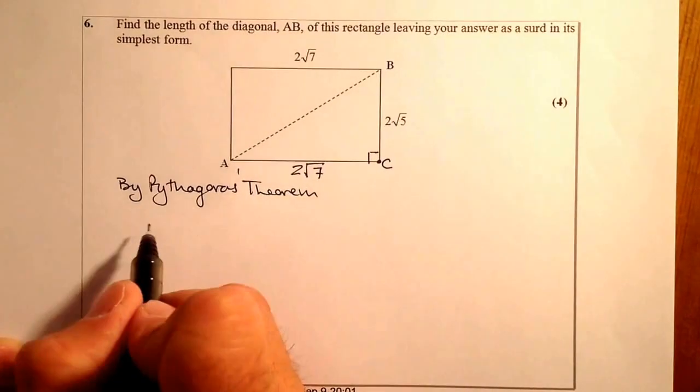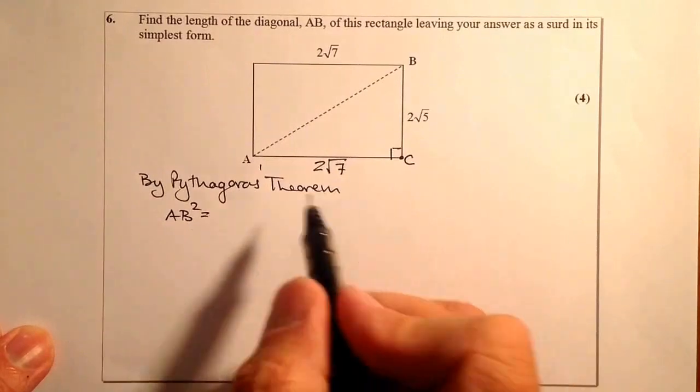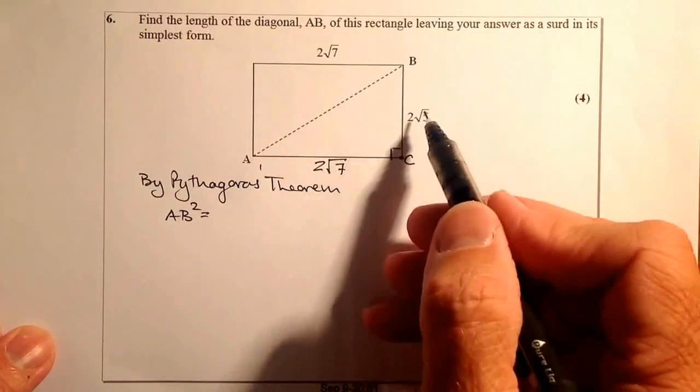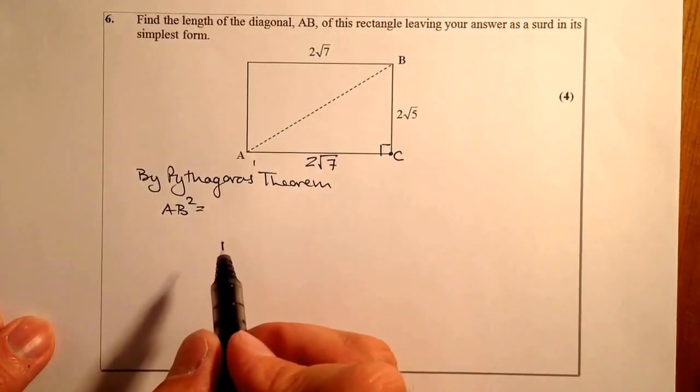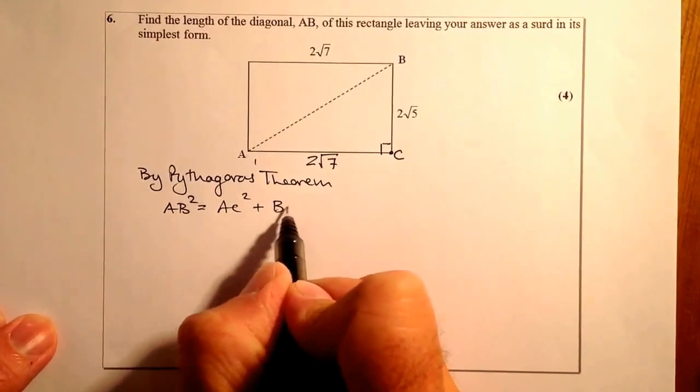Right, let's set up Pythagoras Theorem. So that's going to be AB squared is going to be equal to, and that's the hypotenuse I'm trying to work out, so I'm going to be squaring these and adding them together. So that's going to be AC squared plus BC squared.